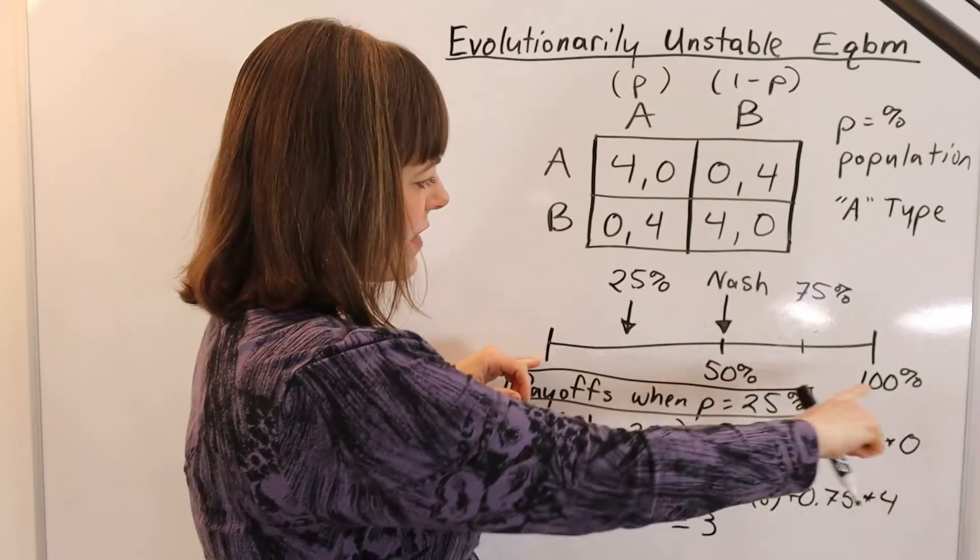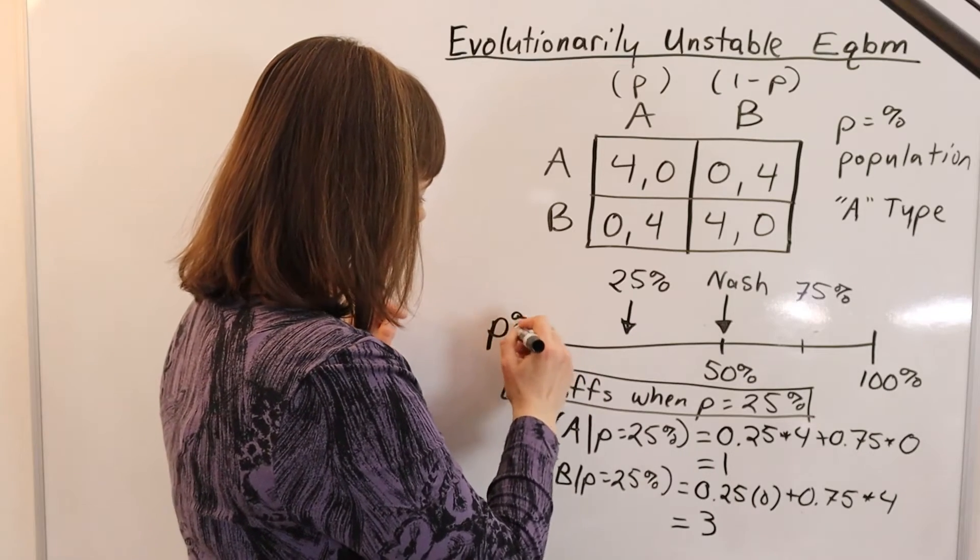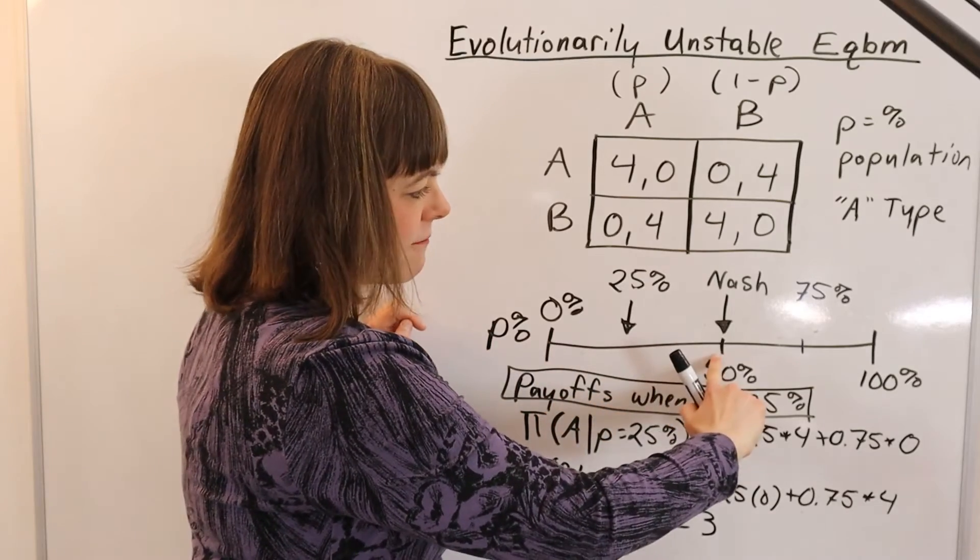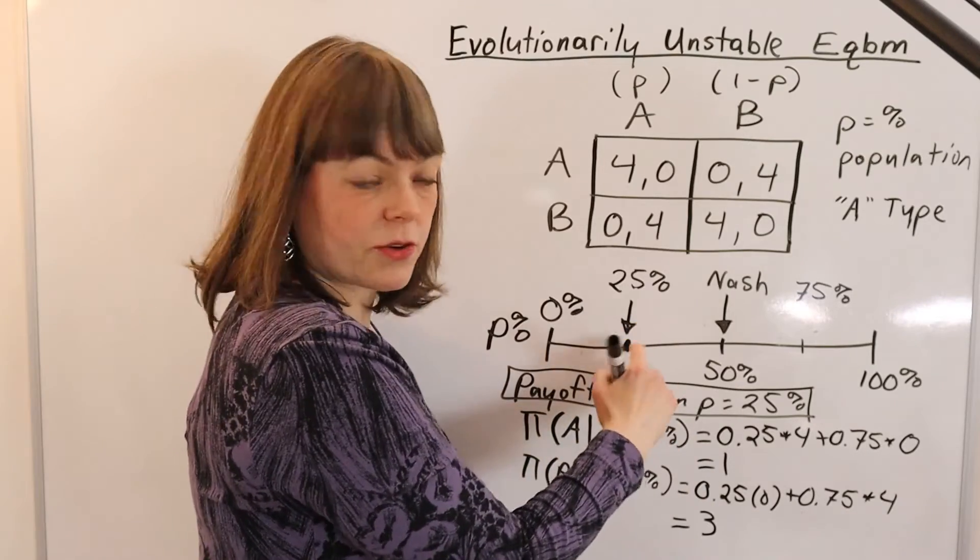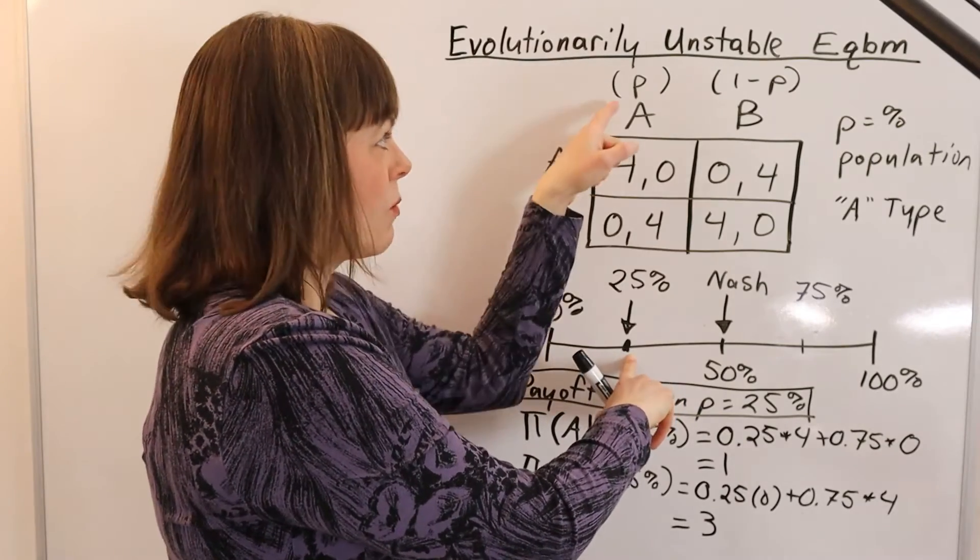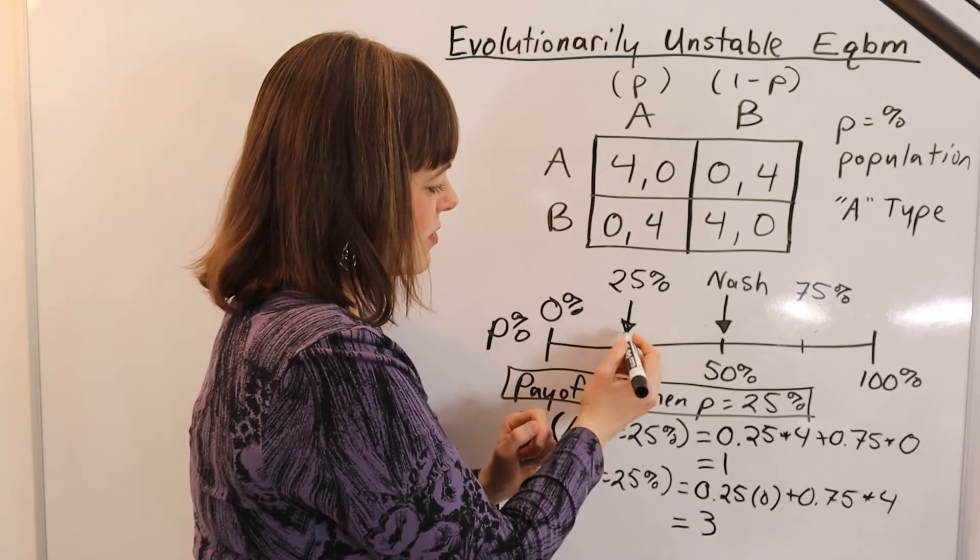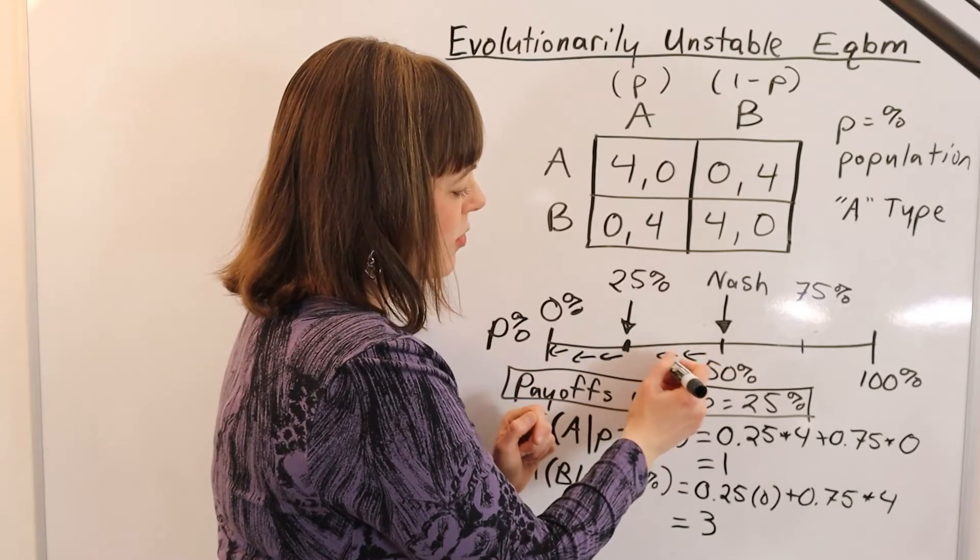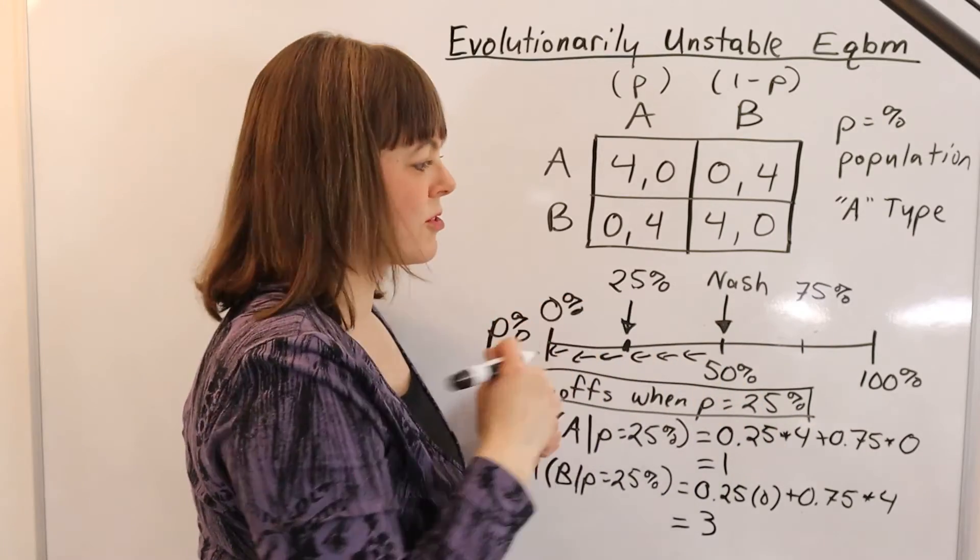So the question is, where does that put us on this spectrum? Oh and I should have labeled this, this is the P percent. So down here we're at 0%, here we're at 25% A types, here we're at 50% A types. So if the Bs have an advantage, if we're standing right here at the 25% mark, the question is what happens to P? What happens to the percentage of A's in the population? If Bs have the advantage, we're going to get fewer and fewer A's. So we're moving in this direction. That means everywhere below the 50% mark, if we bump a little bit below, we're going to tend towards 0% A's.